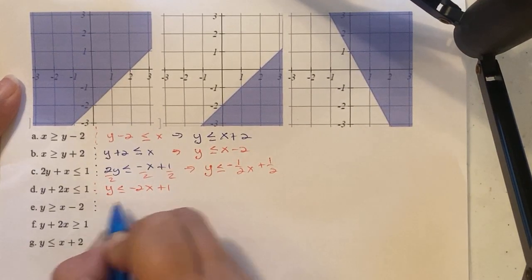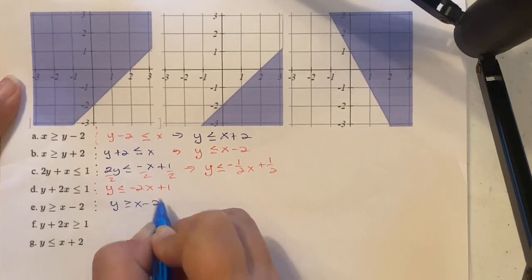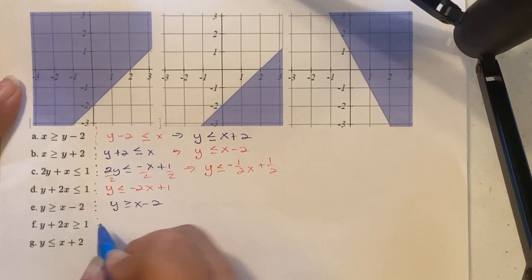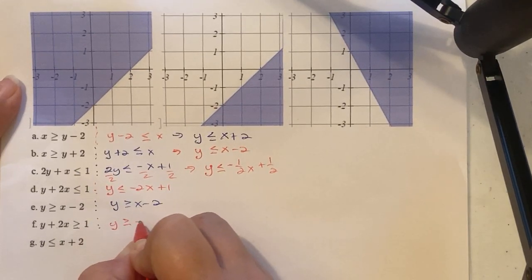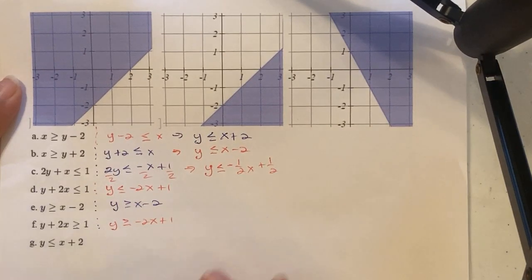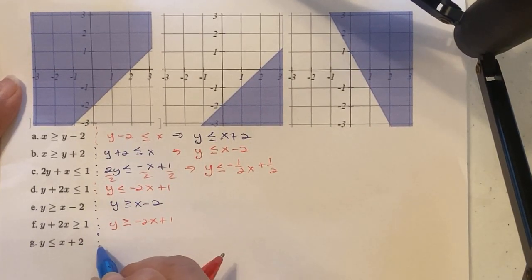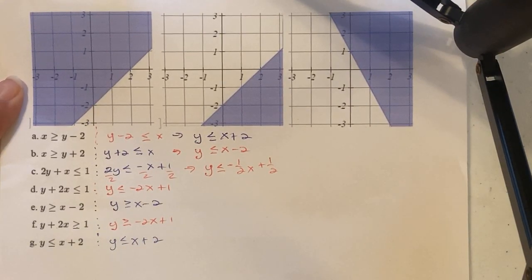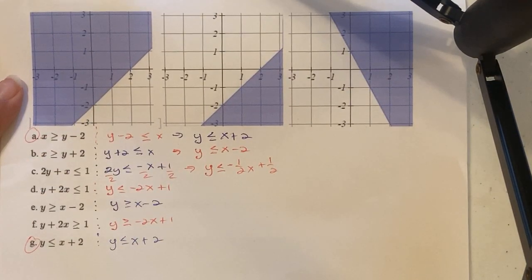The next equation is already in y equals form: y greater than or equal to x minus 2. The next one, subtracting 2x over gives y greater than or equal to negative 2x plus 1. The last one is already in the format y less than or equal to x plus 2. Notice that equations A and G match each other when we do the algebra.